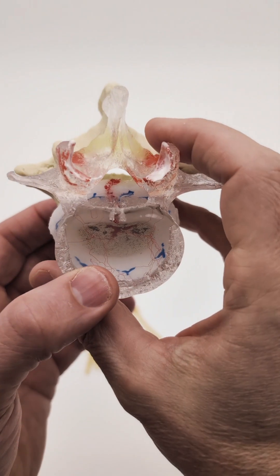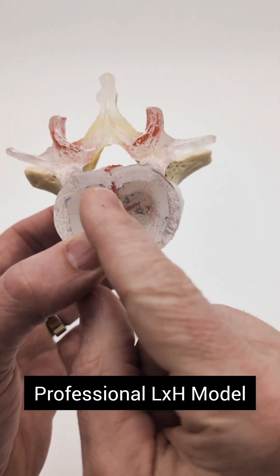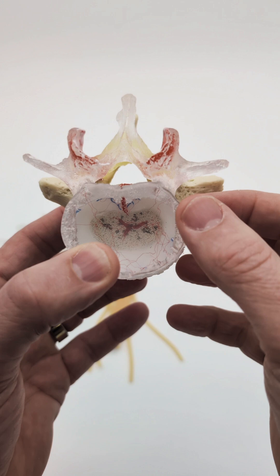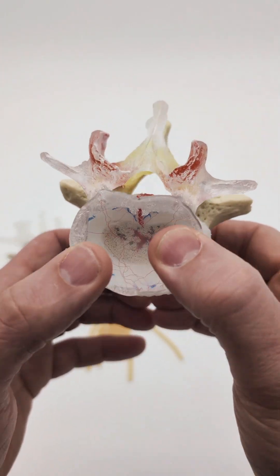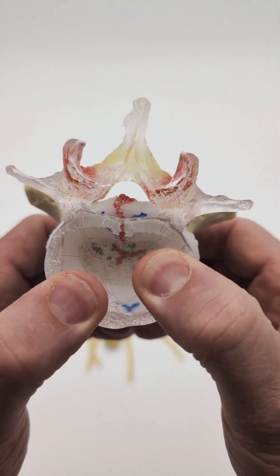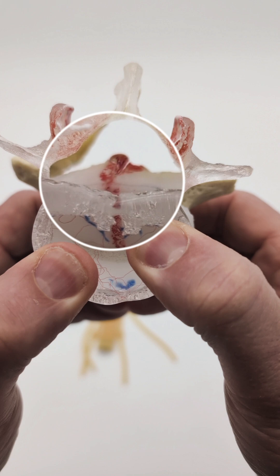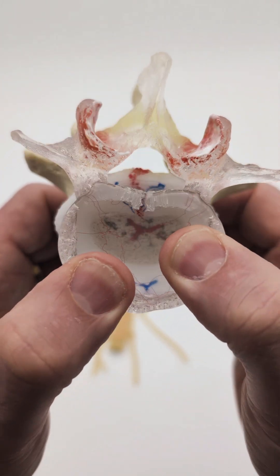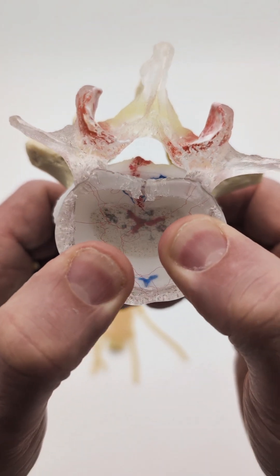Here is a model demonstrating an annular fissure centrally located on the posterior annulus. Under load, the nucleus will actually extrude. This is considered an open fissure disc bulge.